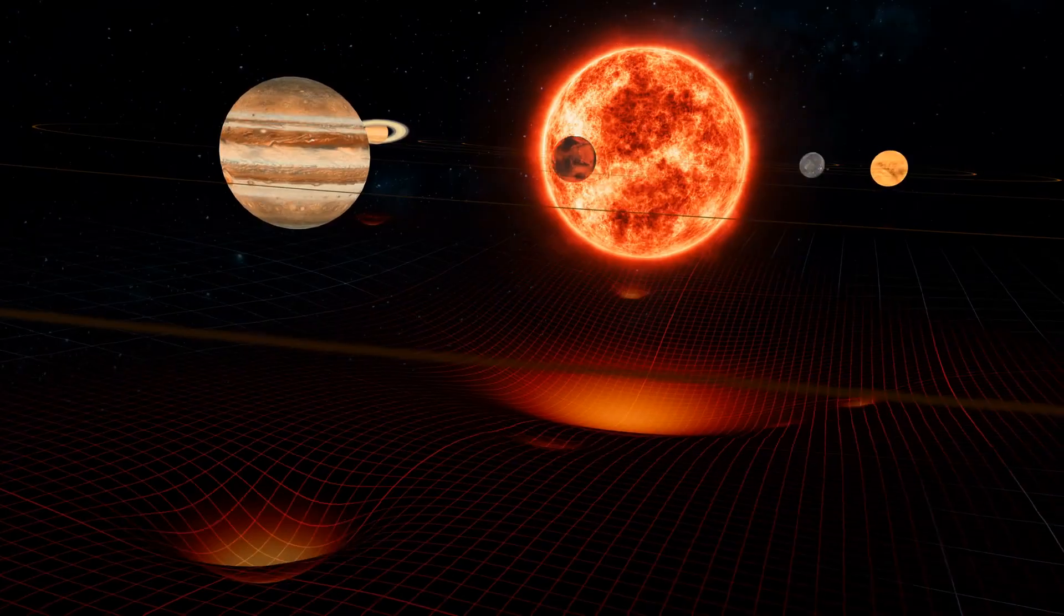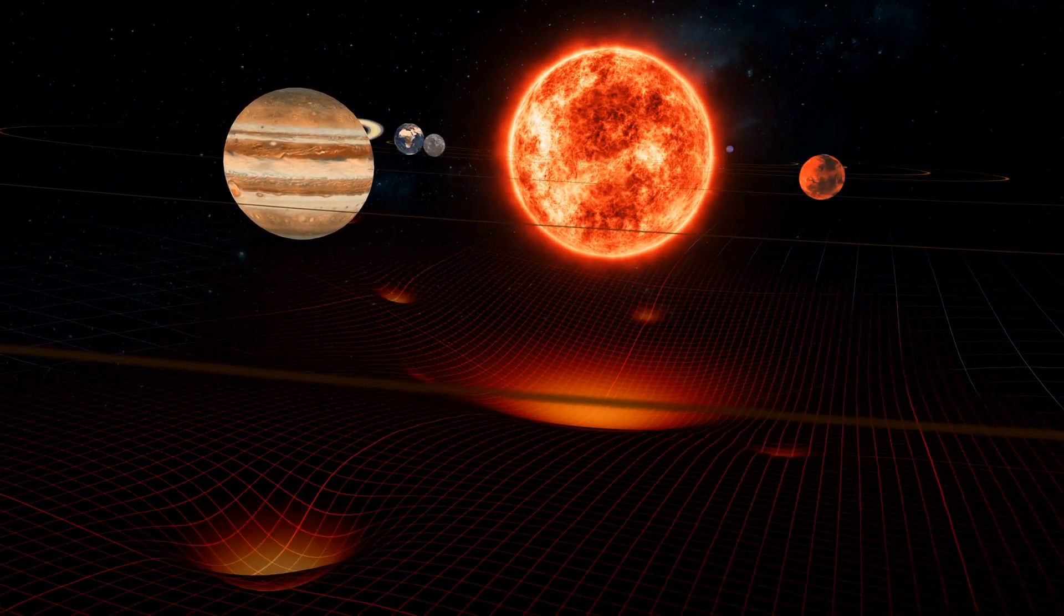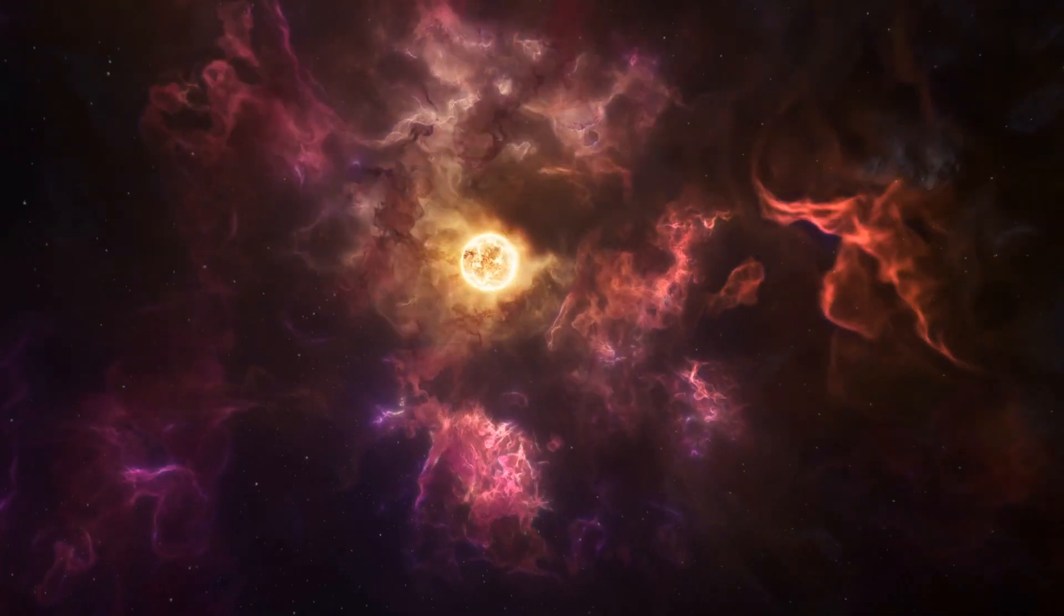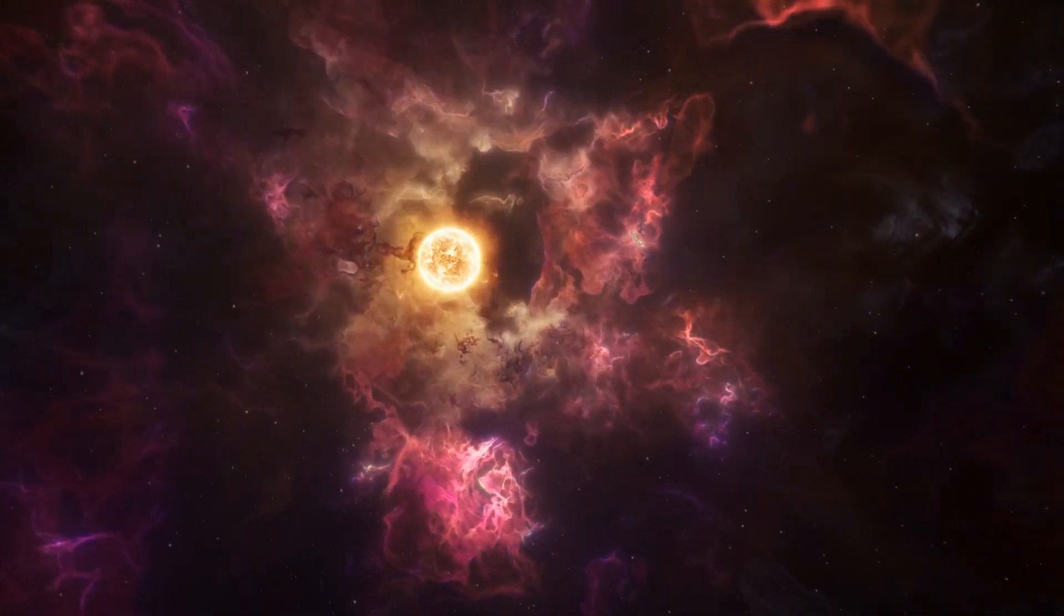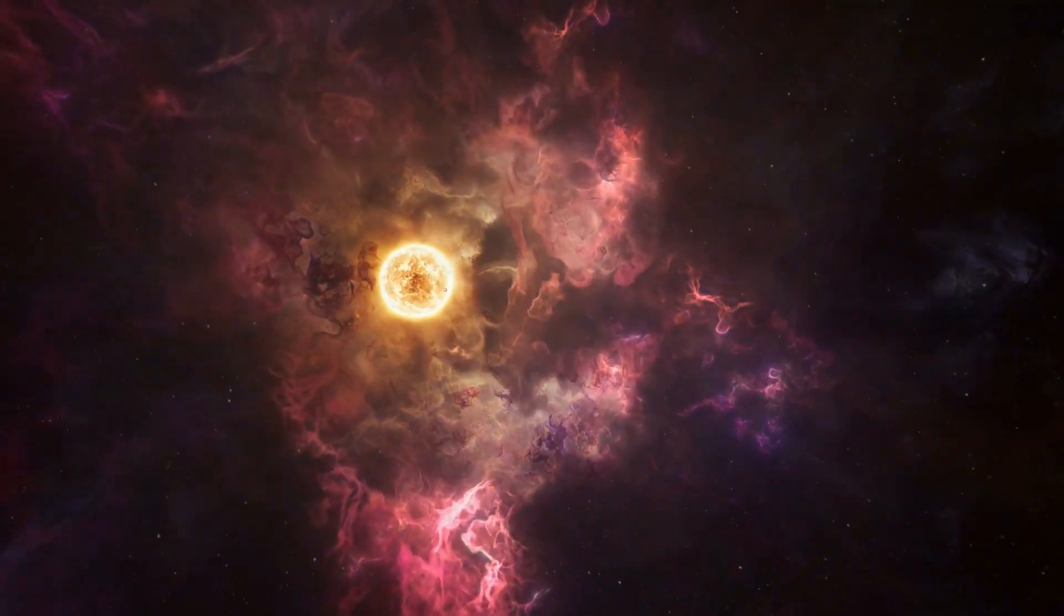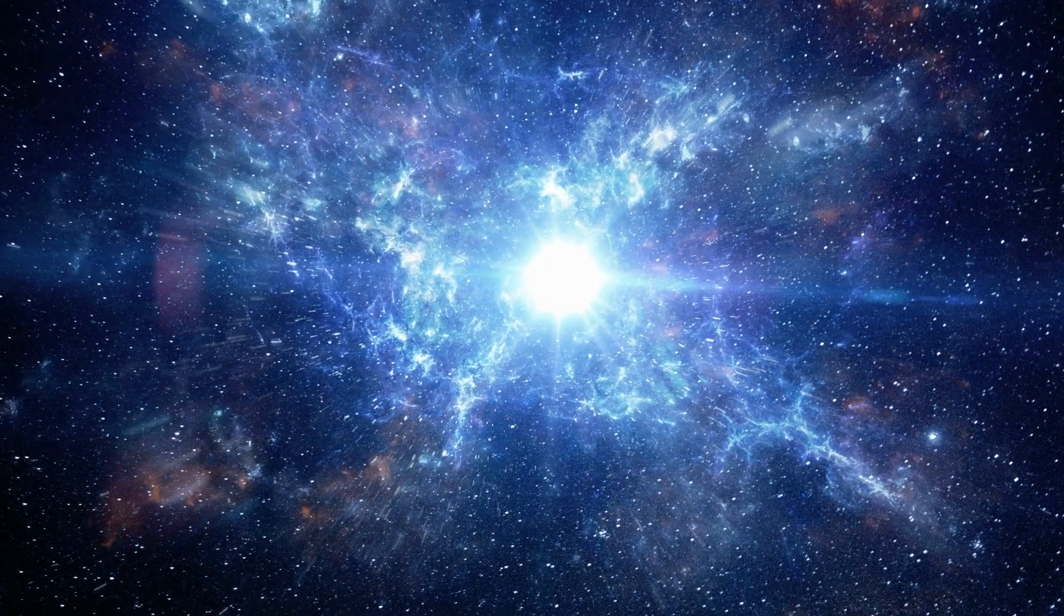When it comes to stars, Proxima Centauri is somewhat peculiar. Alpha Centauri A and B, the two major stars in the system, are around the same size as the Sun and orbit each other in relatively close proximity. The system itself is made up of three stars.